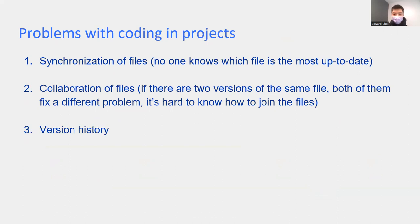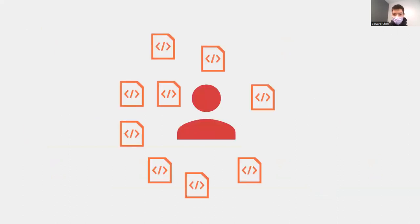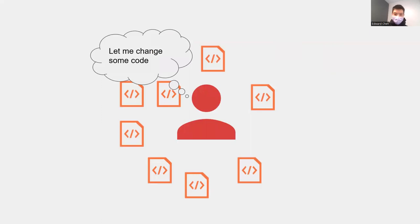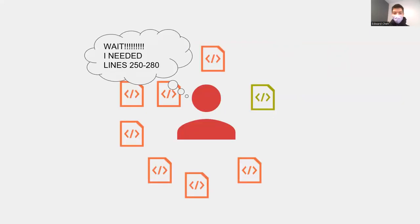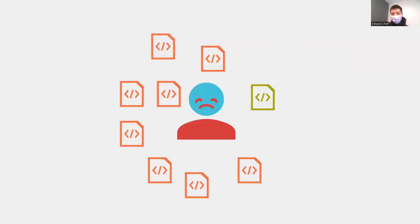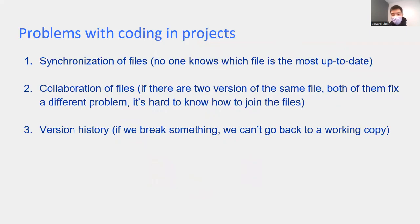The third problem is version history. Ben thinks he can improve his code by deleting 31 lines and adding 40 lines. He modifies the file and is happy. An hour later, he revisits and realizes his code worked better with the lines he deleted — and he can't easily get them back. If we break something by making lots of changes without saving versions along the way, we can't easily go back to a working copy of the code.